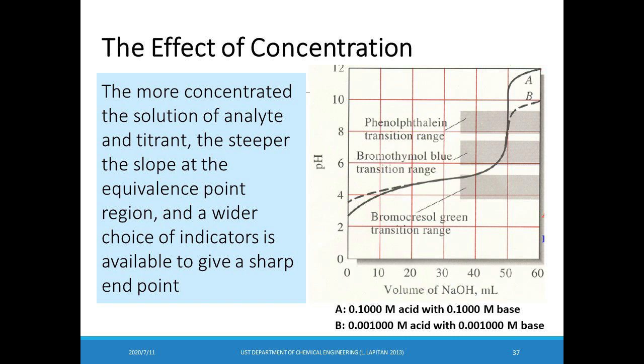One factor affecting feasibility of titration is the effect of concentration. A titration curve obtained using higher concentrations for both titrant and analyte shows a steeper slope at the equivalence point region, meaning a wider choice of indicators is available to give a sharp endpoint.